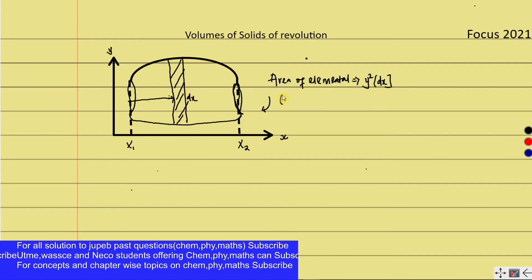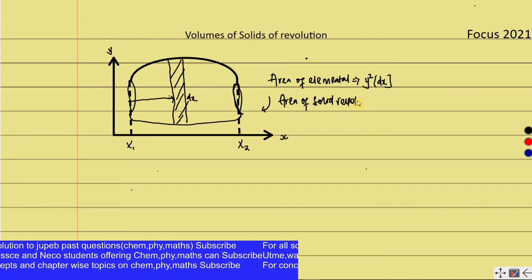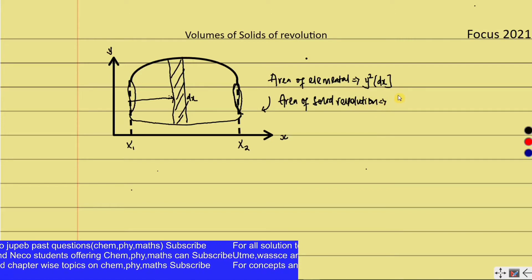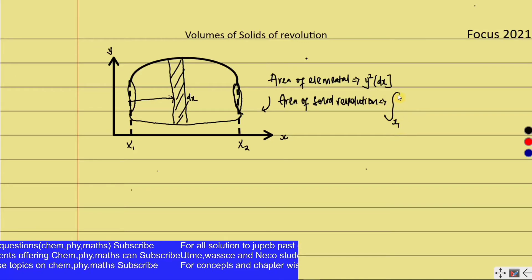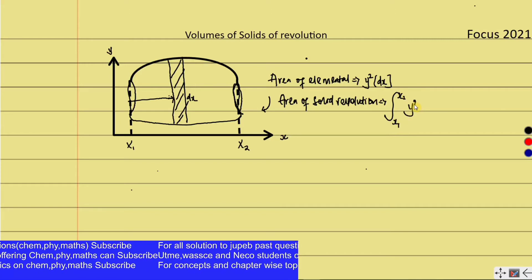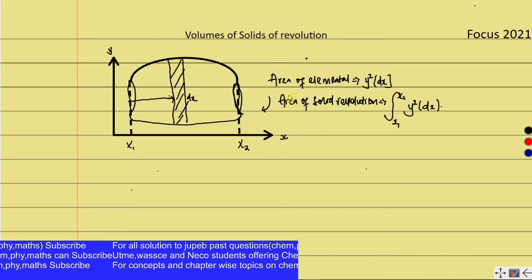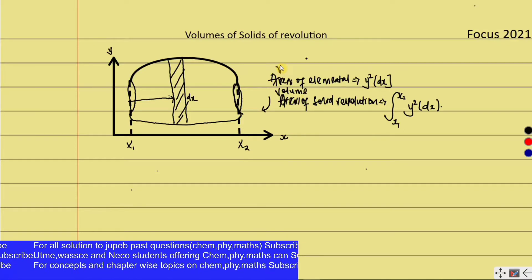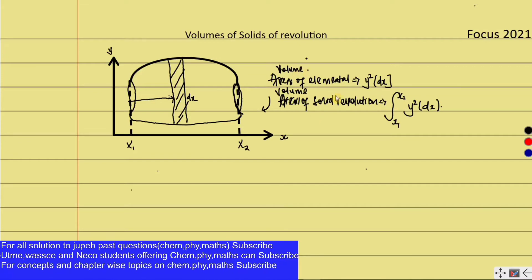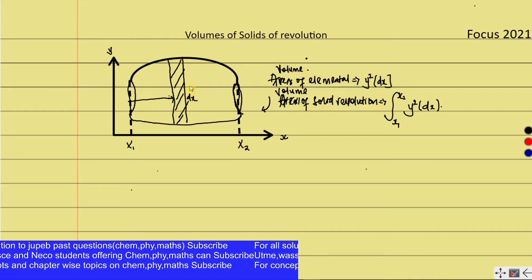The volume of solid revolution can directly be said to equal the integration from x1 to x2 of π y squared dx. This is the formula we use for volume of solid revolution. Please excuse me, not area—volumes. Volume is always area multiplied by dx. The formula uses an elemental side inside the solid of revolution.